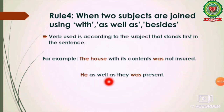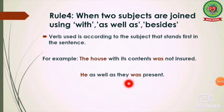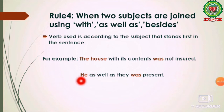'He as well as they was present.' Here we have two subjects — 'he' and 'they' — joined by 'as well as.' We use the verb according to the first subject, which is 'he.' Since 'he' is singular, we use 'was,' not 'were.' So the answer is: 'He as well as they was present.'